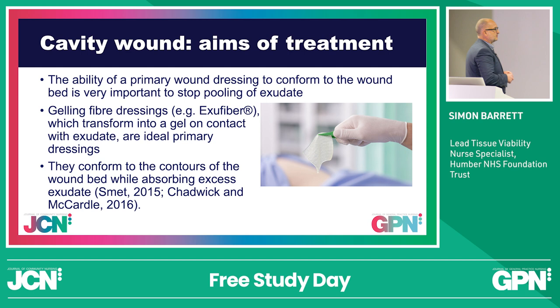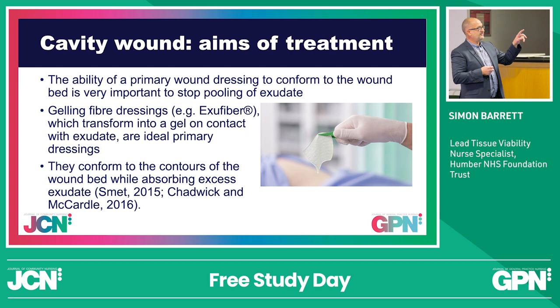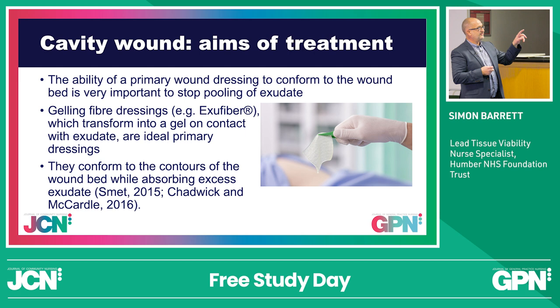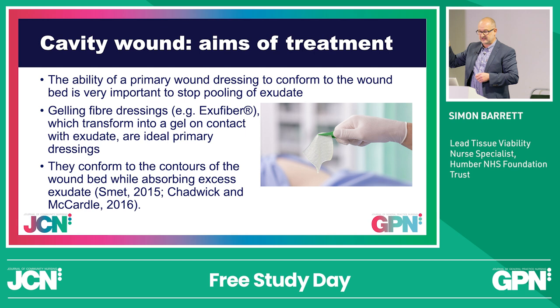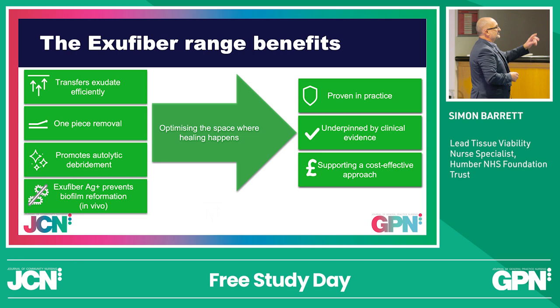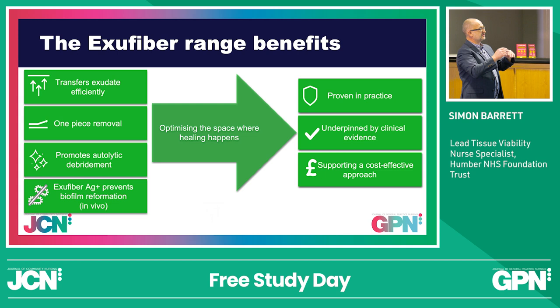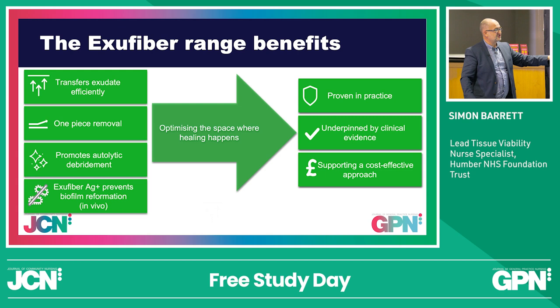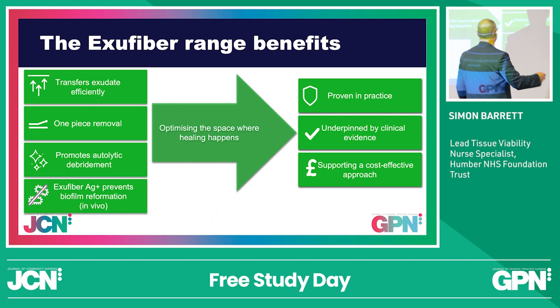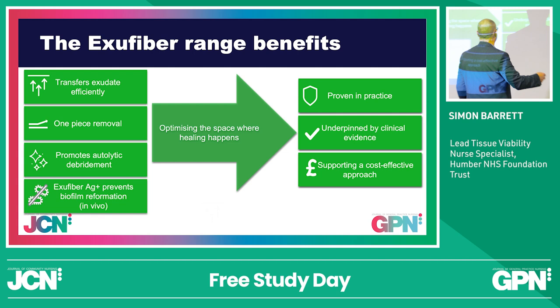The ability of the primary wound dressing to conform to the wound bed is very important so it doesn't pull. Gelling fibre dressings are ideal. ExuFibre is produced by Mölnlycke. It transfers exudate efficiently into the secondary dressing, stopping maceration and excoriation. One-piece removal, no fibre shedding. It promotes autolytic debridement and comes with the addition of silver if required. It's proven in practice with clinical evidence underpinning and supports cost-effective dressing selection.